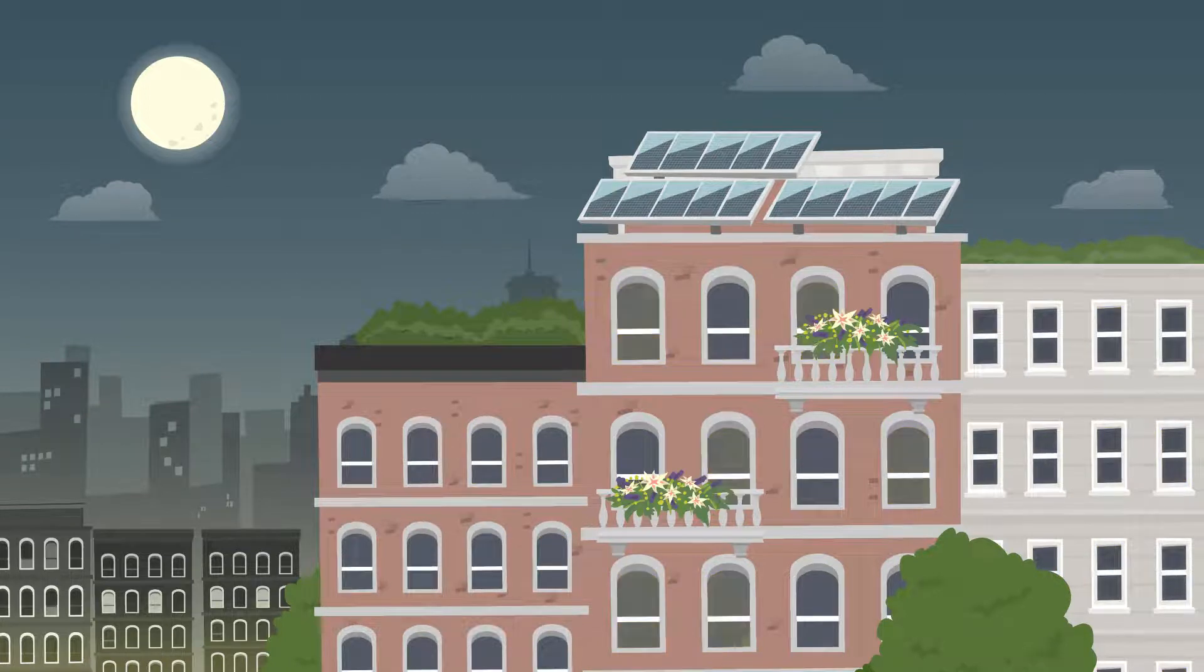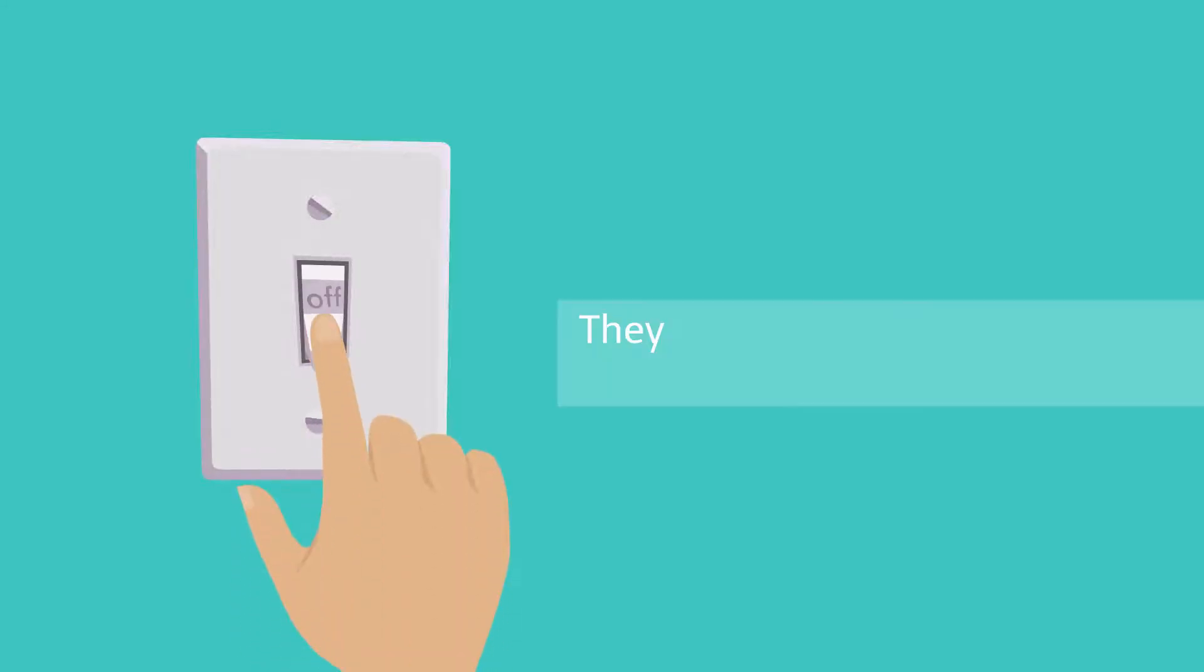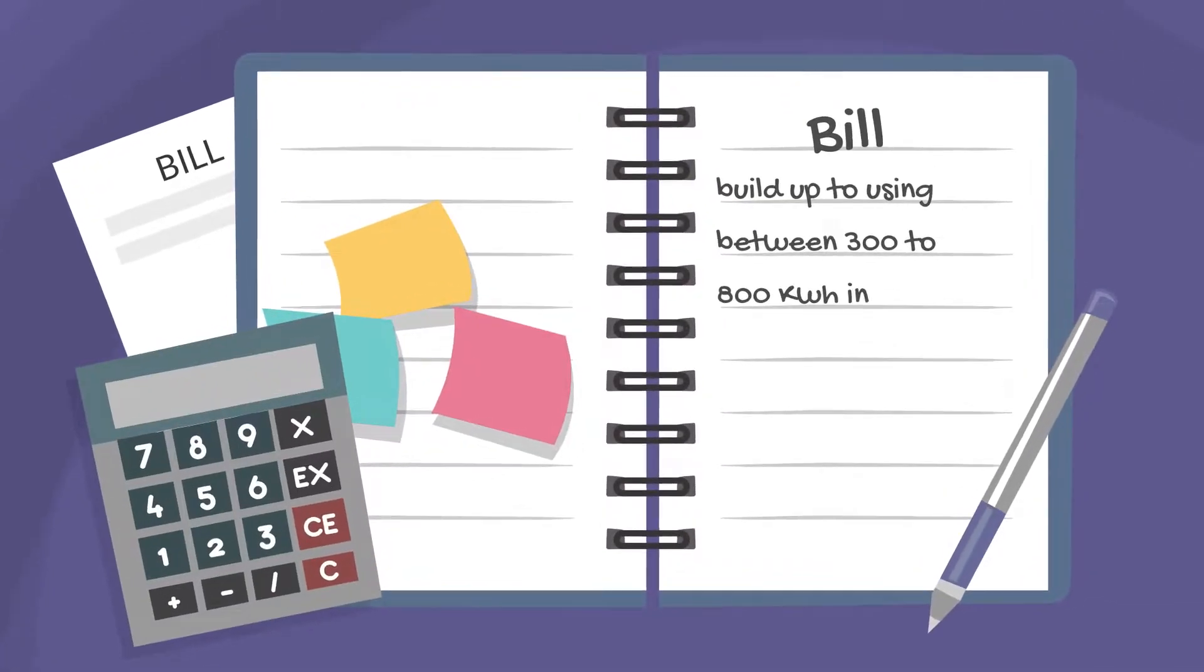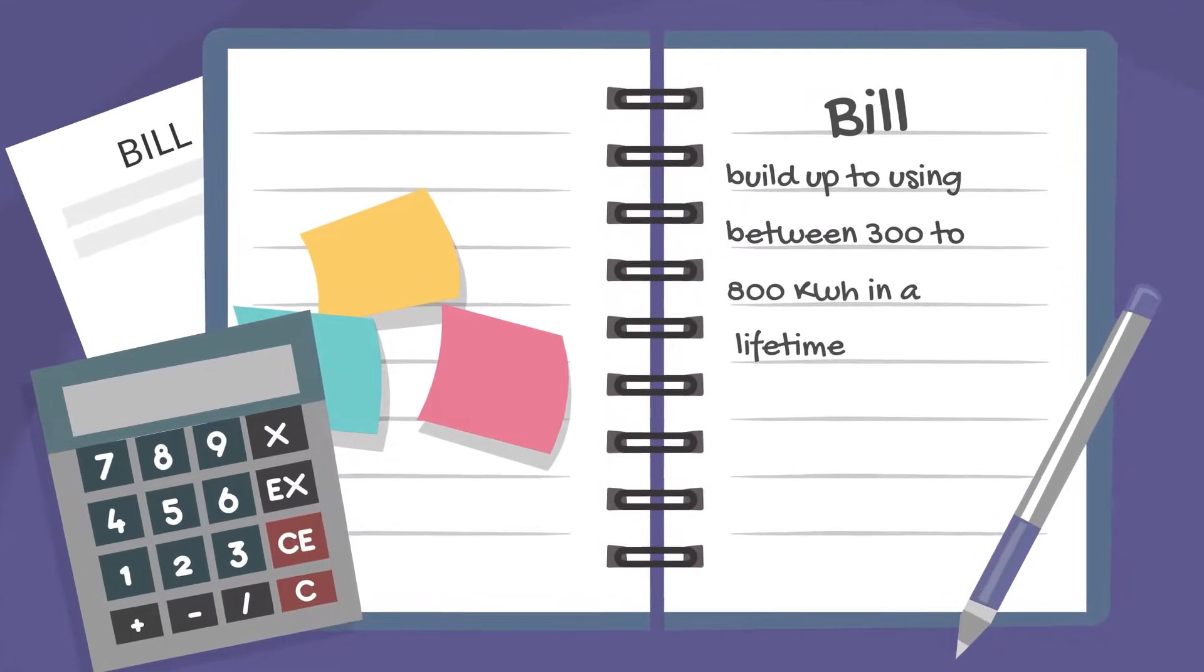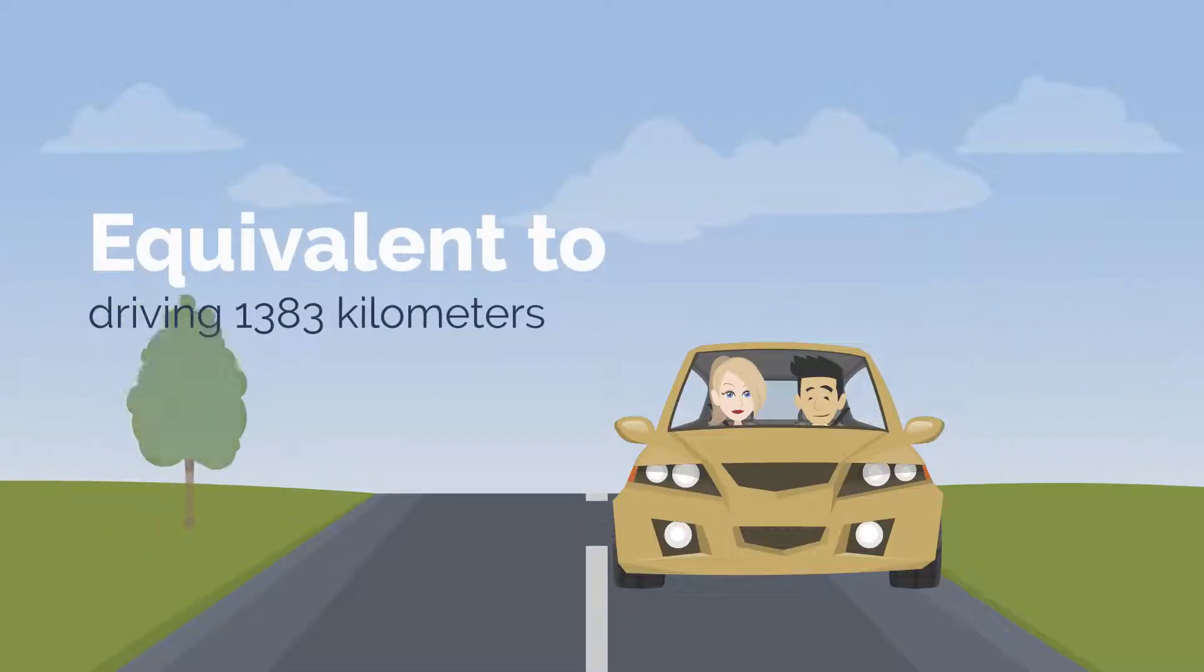Every modern house needs a fridge. While seemingly harmless, they can cost up to 17 euros a month in electricity, and build up to using between 300 to 800 kilowatt hours in a lifetime. This is equivalent to driving 1383 kilometers with a car.